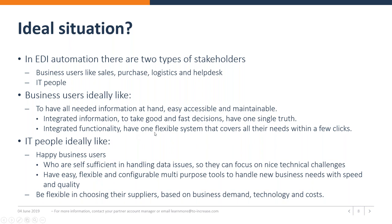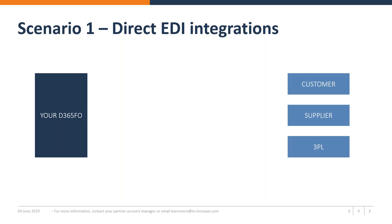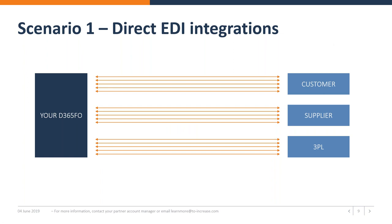With this in mind, we created our EDI solution, which is flexible and can be set up in different ways and scenarios. Scenario one is direct EDI integrations from the ERP directly to customers, suppliers, and logistic service providers. But there are multiple customers, multiple suppliers, and possibly multiple logistic service providers, which means a lot of integrations to maintain. This requires a lot of setup, a lot of knowledge on the ERP side, and a lot of communication with each customer and supplier — since they all want things slightly differently.